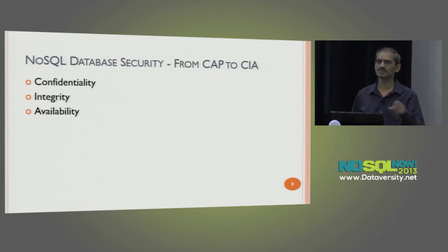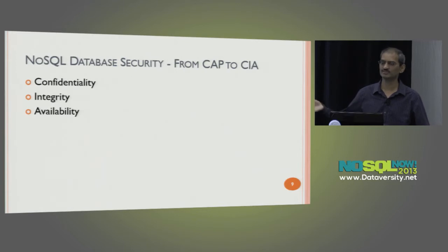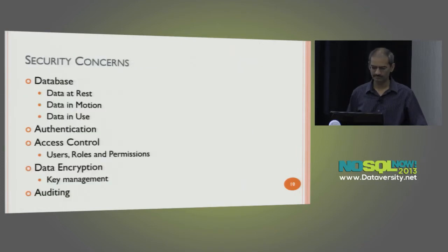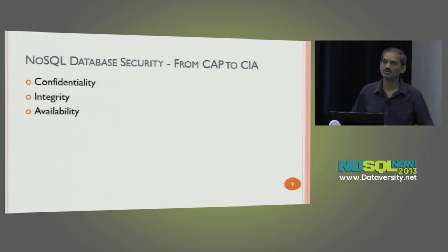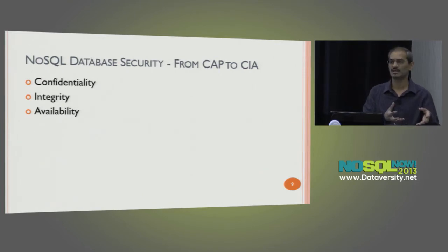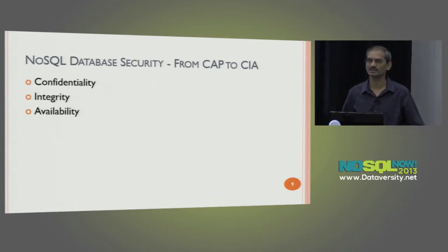Confidentiality means ensuring that authorized users get access to the right data and unauthorized users cannot. Integrity is about the data itself — is it being tampered with when transferred from one system to another, or modified by unauthorized users? Availability means unauthorized users are not bringing down the systems. With NoSQL being related to cloud, mobile, and social technologies, there is a lot of data in motion, moving from one system to another. Confidentiality, integrity, and availability are even more critical in NoSQL than in relational databases.